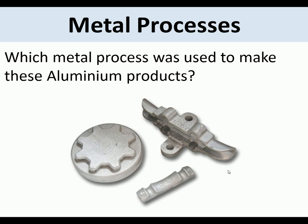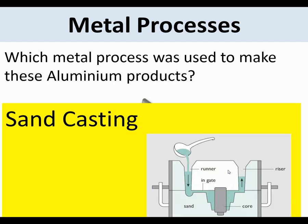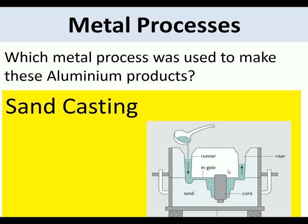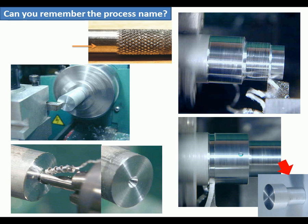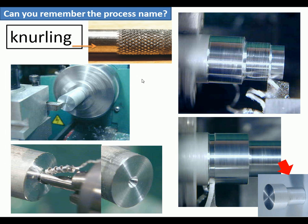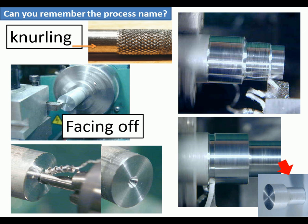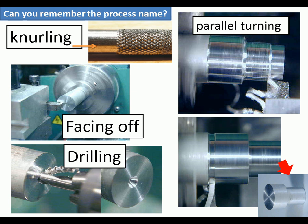Which metal process was used to make these aluminium products? It was sand casting. Can you remember these process names? These are turning or lathe processes: knurling, facing off, drilling, parallel turning, and parting off.